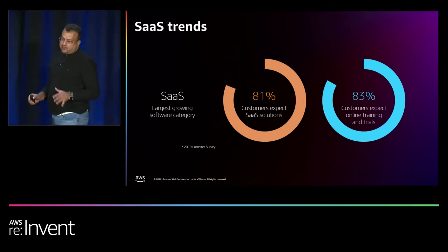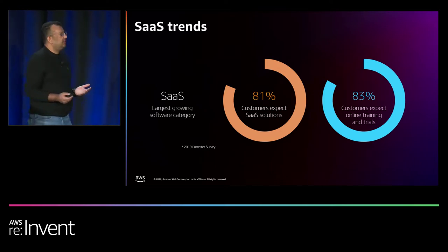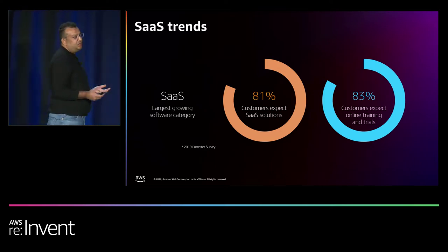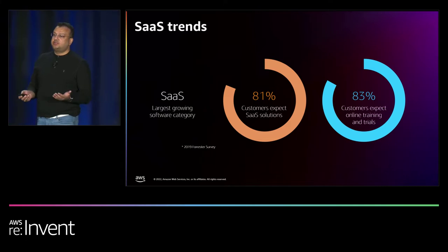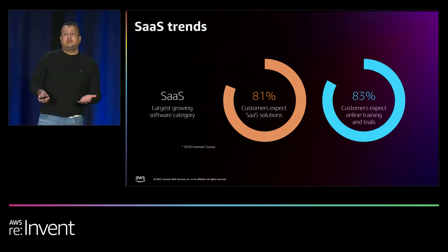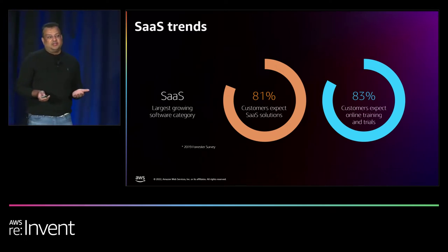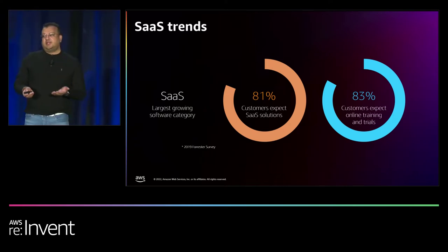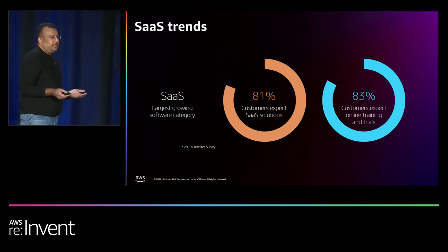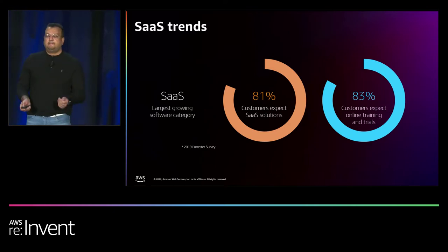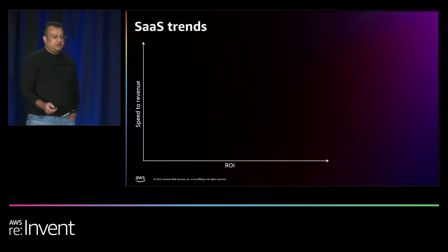Let's start at the very beginning — why do this at all? Forrester ran a survey showing that 81% of your customers actually expect SaaS versions of your applications. In fact, 83% of these customers might not even try your applications if a SaaS version is not available. It's really important to align with these trends, because without a SaaS version, you eliminate the entry funnel of all those customers who could be bringing you revenue.